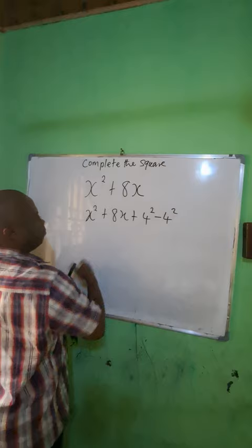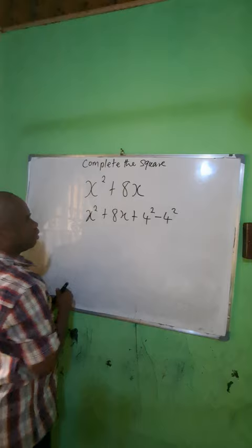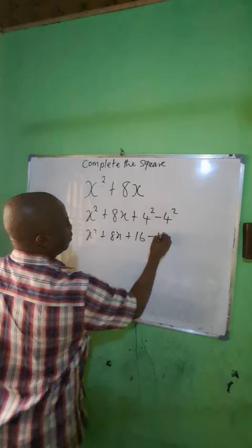So we have 16 in the expression, and we can factor that. This gives us (s + 4) squared. Thank you very much.